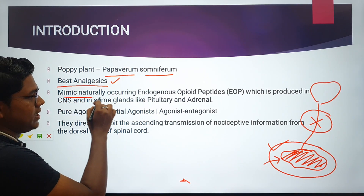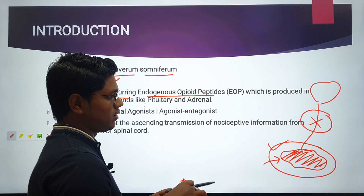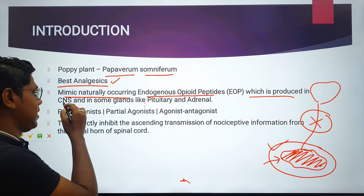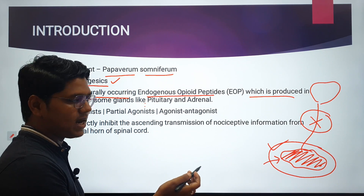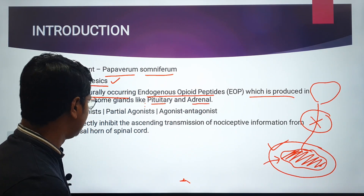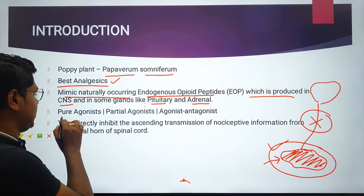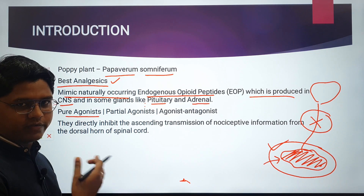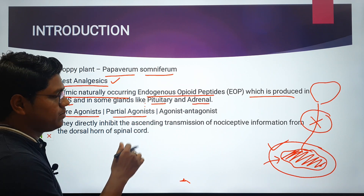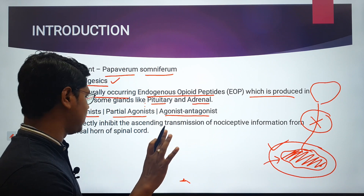Opioids mimic the naturally occurring endogenous opioid peptides produced by the body in the CNS and glands like the pituitary and adrenal gland. There are three kinds of opioids: pure agonists like morphine, oxymorphone, butorphanol, and hydromorphone; partial agonists like buprenorphine; and agonist-antagonists like butorphanol.